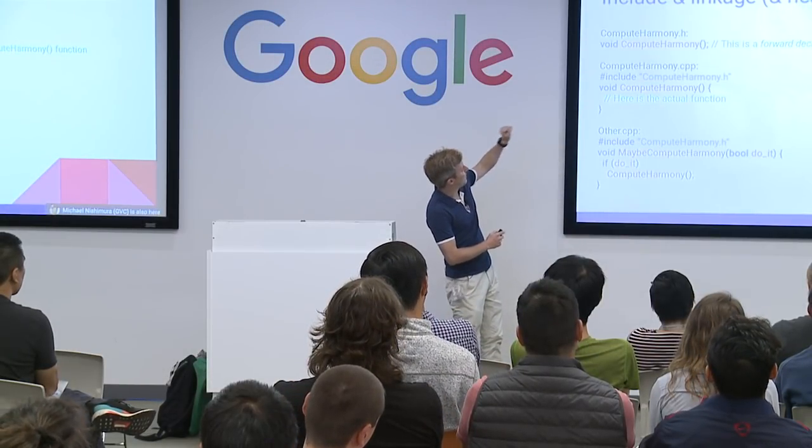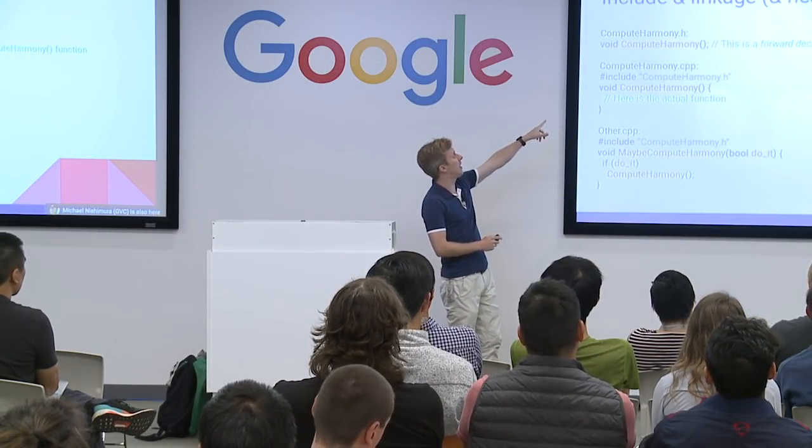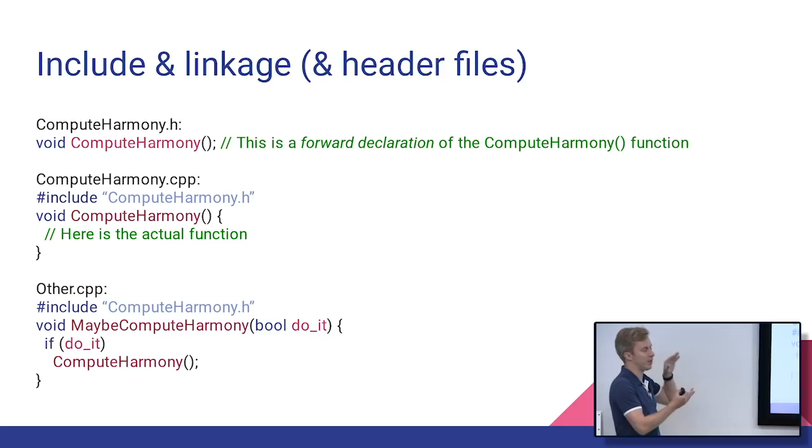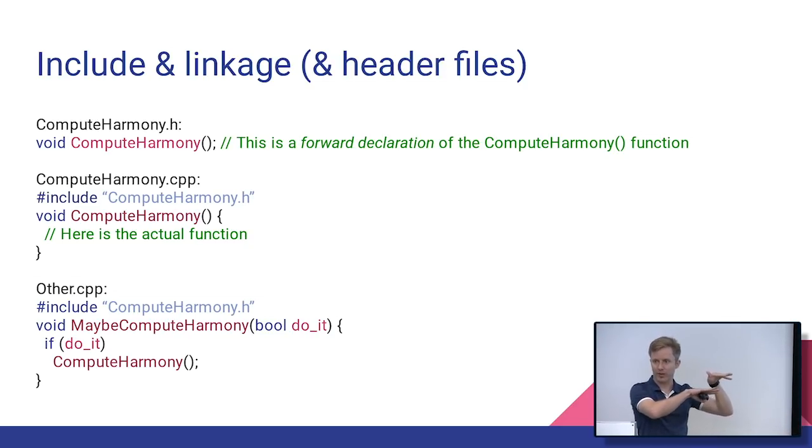So here's what that would look like. We have our .h file. All it does is forward declare there will be a function. This is what the signature looks like. And we have the cpp file. It includes the .h file just to make sure the forward declare and the actual function link up. And then that's where you put the actual function body.